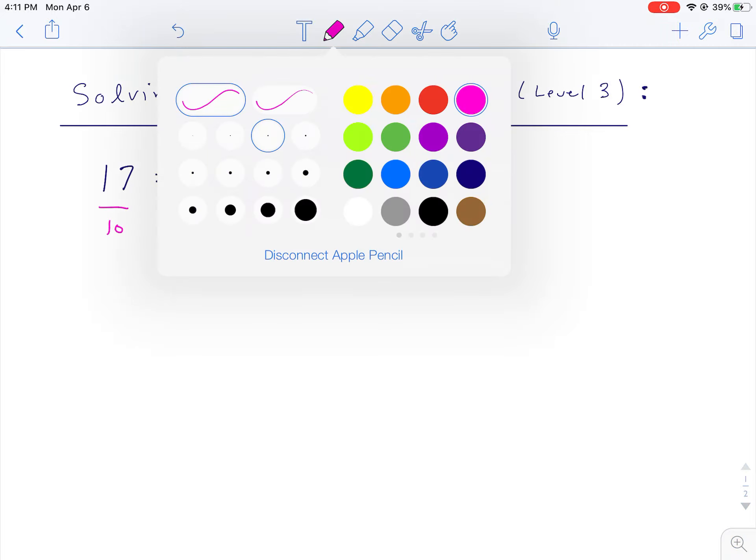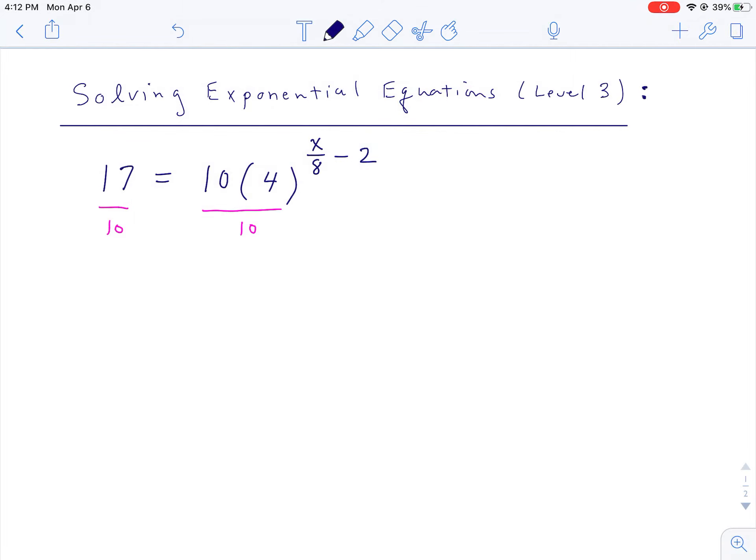And of course 17 divided by 10 is just 1.7, and you're left with 4 to this really ugly power, x over 8 minus 2. And of course here you have to get that exponent down.